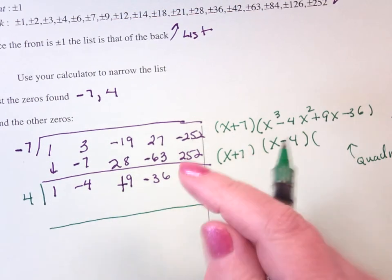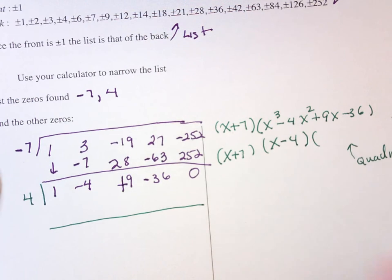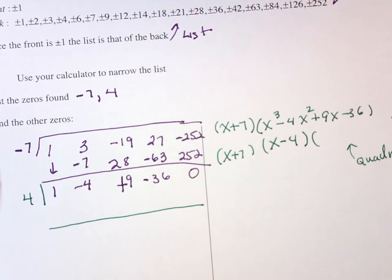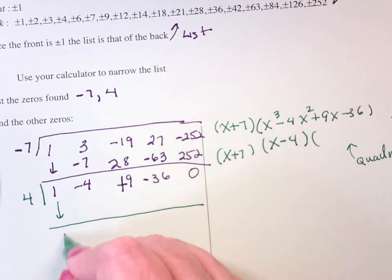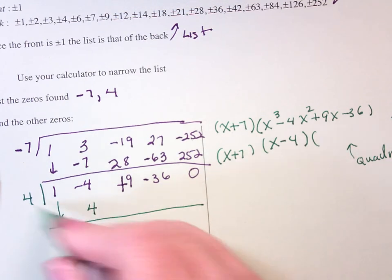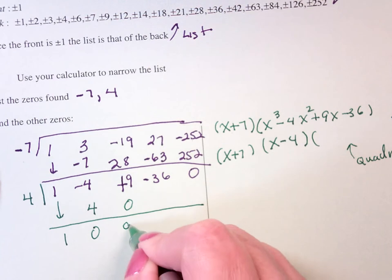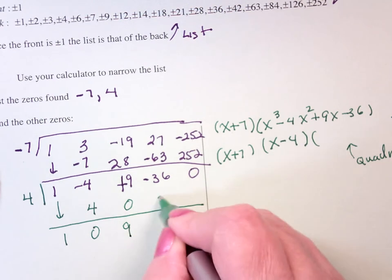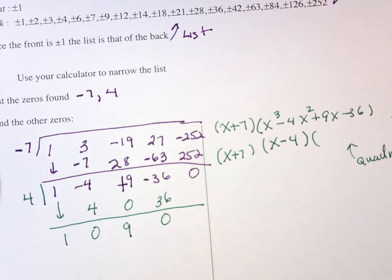Now, the remainder should be zero, and what I should have is a quadratic. So, bring down the 1, 4 times 1, oh, isn't this cute, is 4, and add, 4 times 0 is 0, and add, 4 times 9 is 36, and add, that's 0.